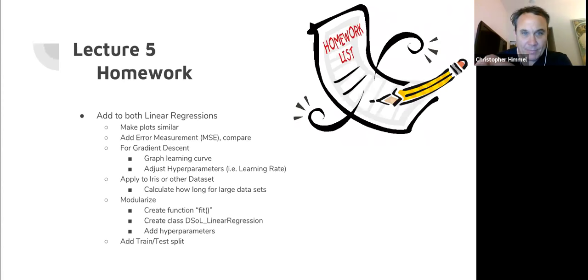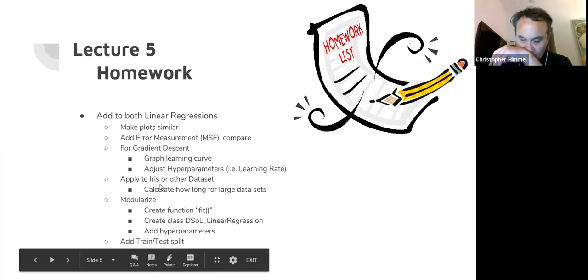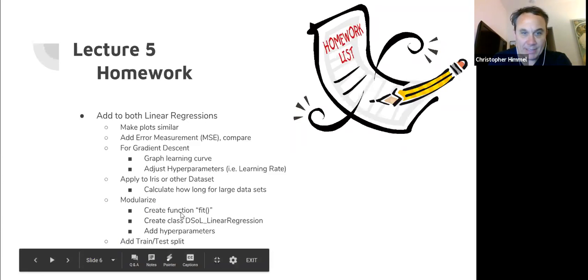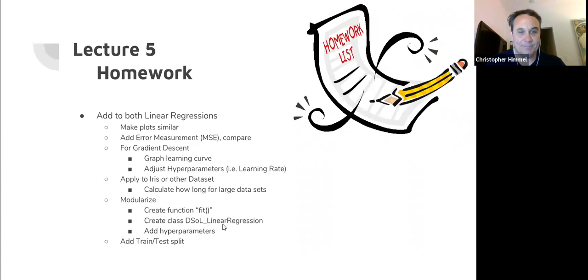Expand the gradient descent to the IRIS or another dataset if you wish, just like we did for the neural network. Figure out how long it takes to run. Also modularize the gradient descent version and add the train-test split. Should be pretty straightforward.